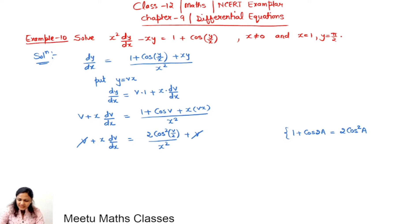And x square v by x square will give you v only. Now from both sides v can be cancelled out, so x dv by dx equals 2 cos square v by 2 upon x square.